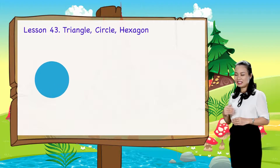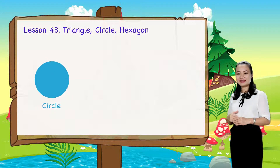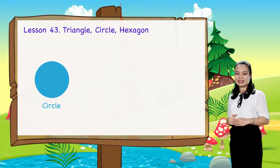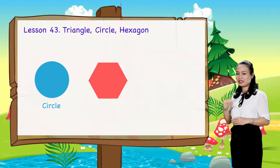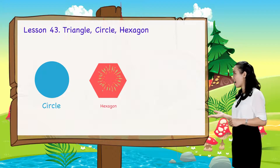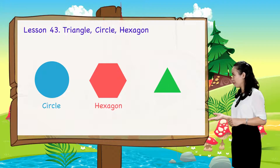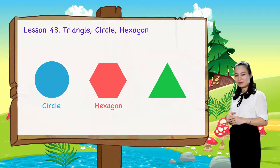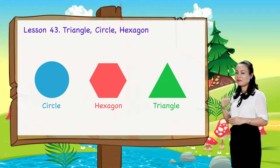What shape is it? It's a circle. What shape is it? It's a circle. This is a hexagon. What shape is it? This is a triangle.